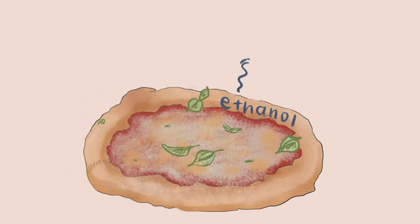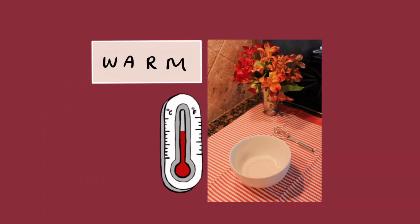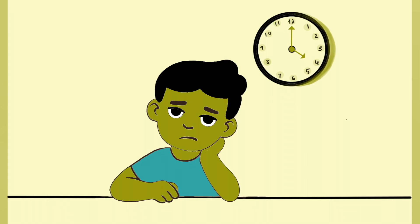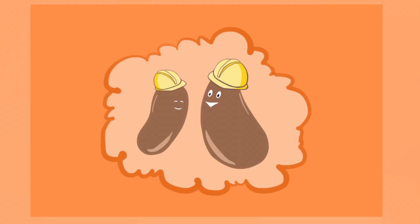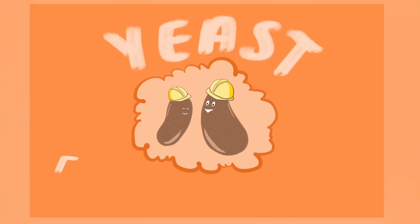Fermentation also produces ethanol, an alcohol that evaporates during the baking process. Putting the dough in a warm place allows fermentation to take place more quickly. But remember, yeast is still alive, and if the temperature is too high, they will get killed and your dough won't rise. Now you know that when we allow our dough to rest, we're not just sitting around waiting — we're really allowing the yeast to do their job and make our crust fluffy and delicious. And that's yeast fermentation.